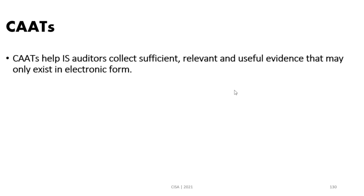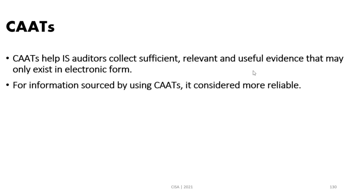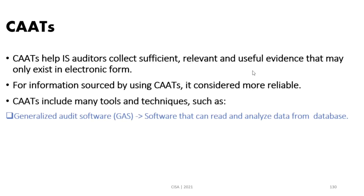Computer assisted auditing tools (CAT) is a wide term describing data analytics tools. CAT helps IS auditors to collect sufficient, relevant, and useful evidence that may only exist in electronic form. Information sources accessed using CAT are considered more reliable. Data exported from a system using audit software or computer assisted audit tools is considered more reliable. CAT includes many tools and techniques — for instance, generalized audit software (GAS).